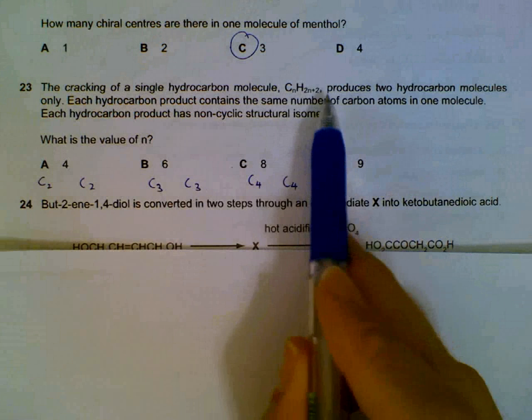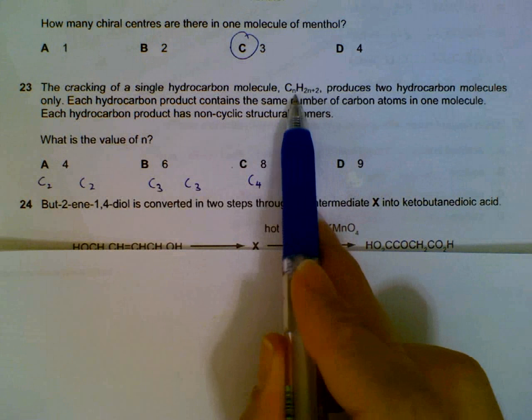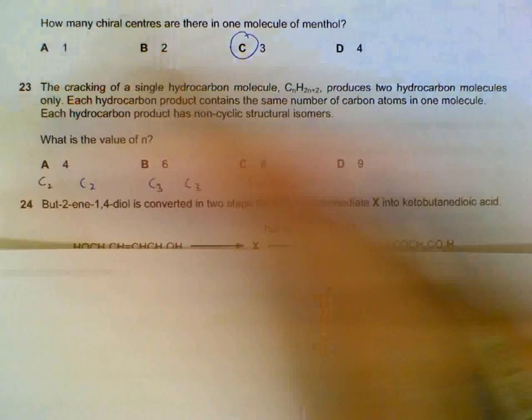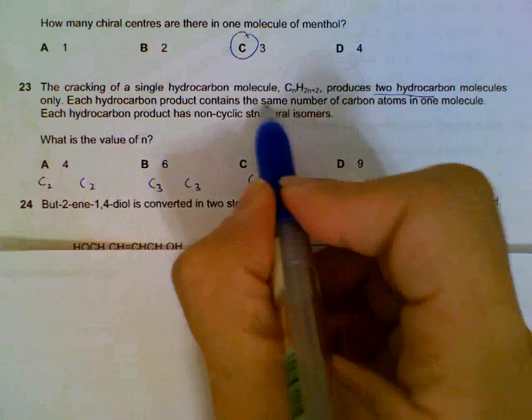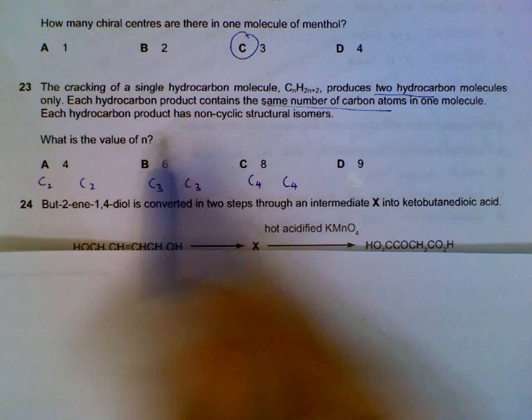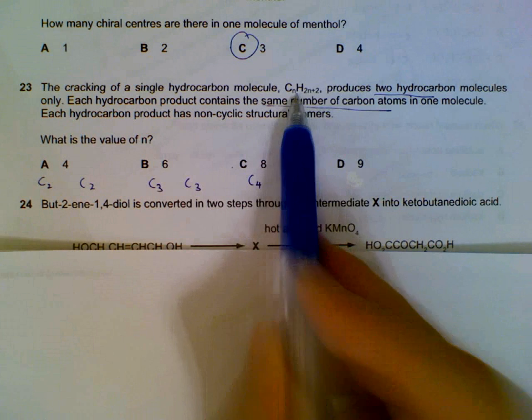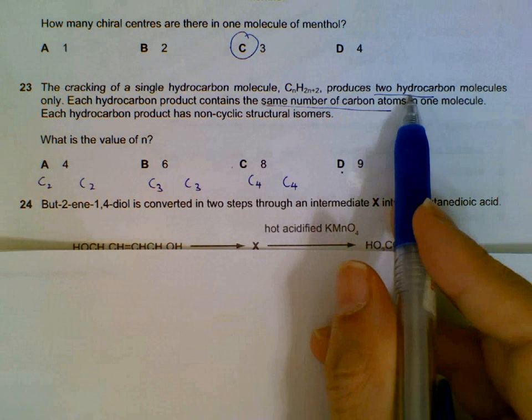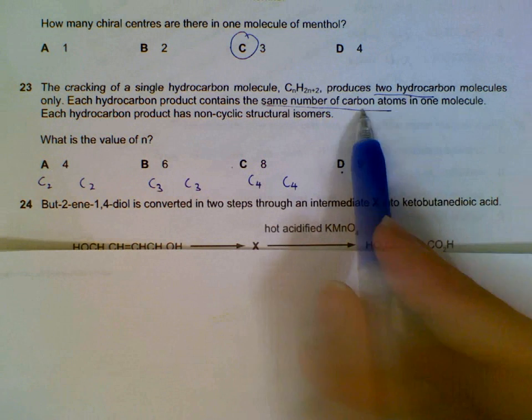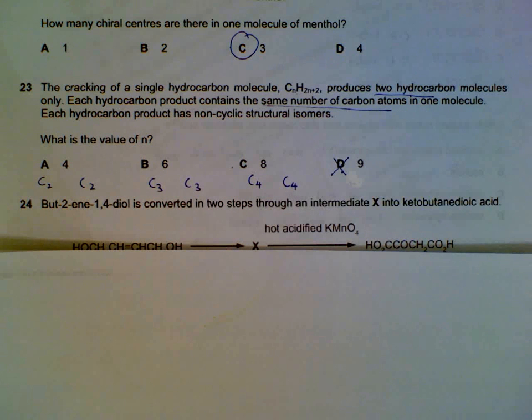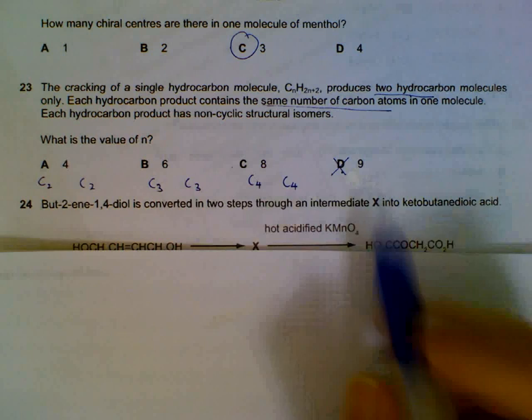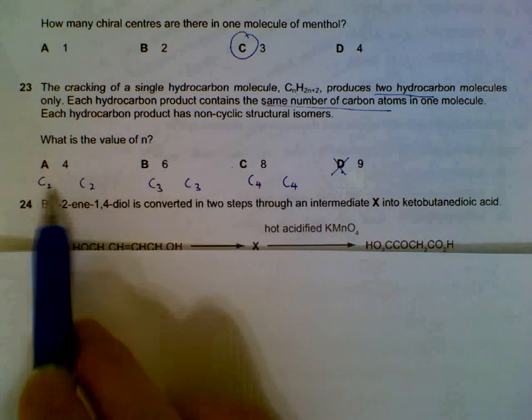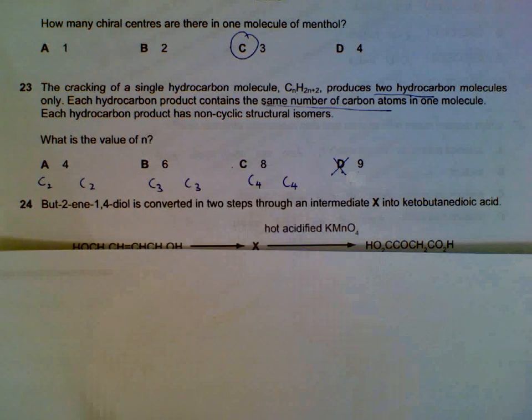Question 23: quite a bit of info. We have a long chain hydrocarbon, and it produces 2 hydrocarbons only. Each one contains the same number of carbons. So what could the number of carbons be in the beginning? We can eliminate 9 carbons straight away, because there is no way of producing 2 hydrocarbons with the same carbons. It's between 4 carbons, 6 carbons and 8, which will give us 2 carbons each, 3 carbons each and 4 carbons each.